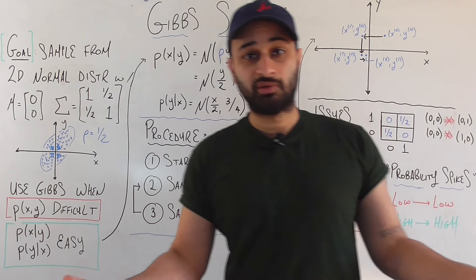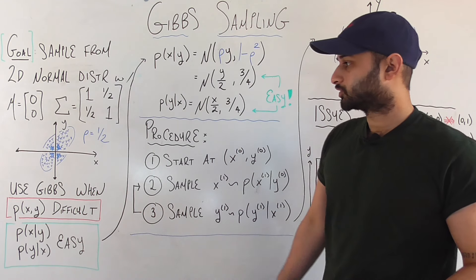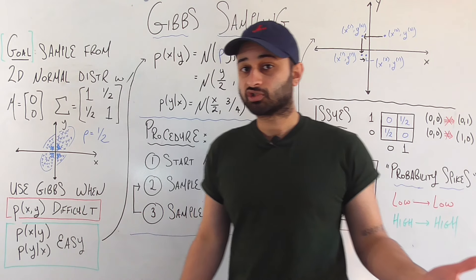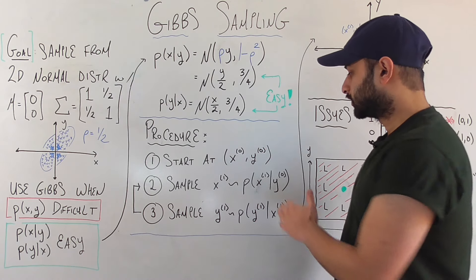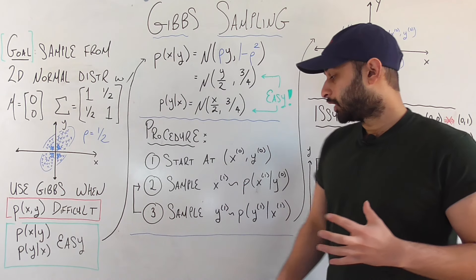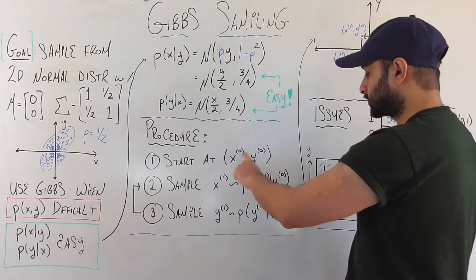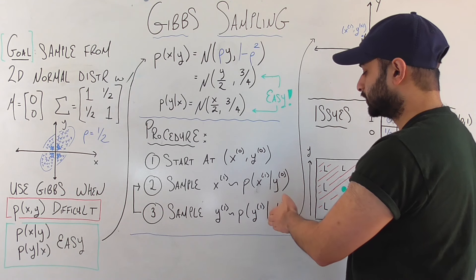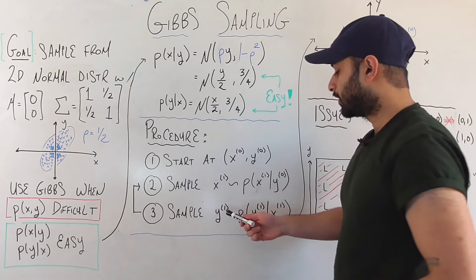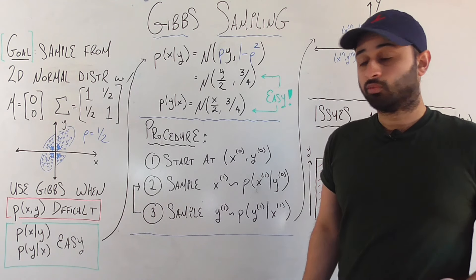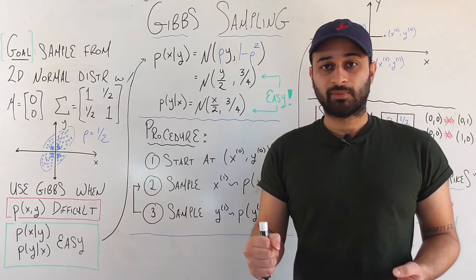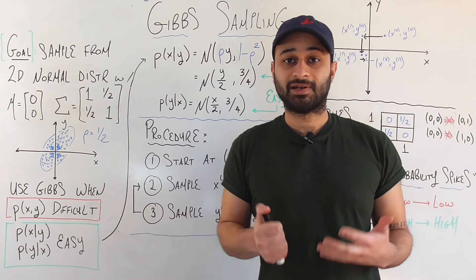Gibbs sampling proceeds as an extremely simple algorithm. We start by initializing some x₀, y₀ — preferably somewhere close to the center of the distribution, though it could really be anywhere; it just affects how fast it converges. Next, we change x while keeping y fixed. We sample the new value of x from the conditional distribution of x given the existing y₀. Then we sample a new y₁ given the new x value we just sampled. We then rinse and repeat for as many samples as desired.